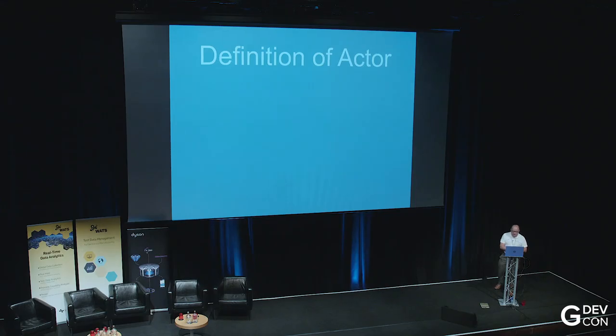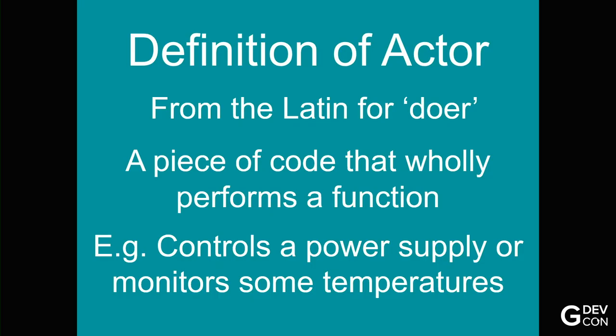So, the first thing I want to do is define an actor. The Greeks and the Romans think they defined actor, but I'm taking it from the Latin for doer. So, I want to define it as a piece of code that wholly performs a single function. For example, a code that controls a power supply, or monitors some temperatures, or sets some relays. It's on its own, it's standalone, it's doing one thing and doing it well.